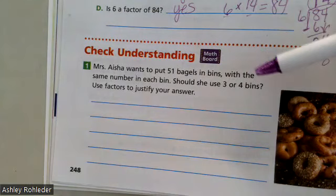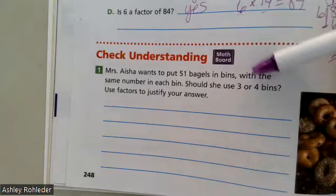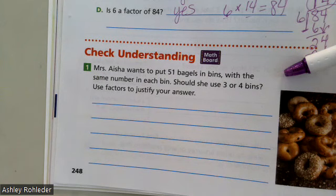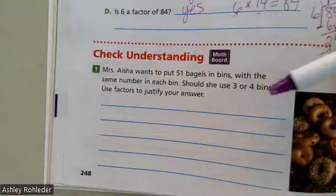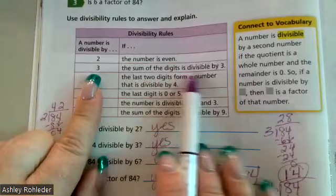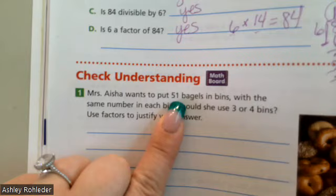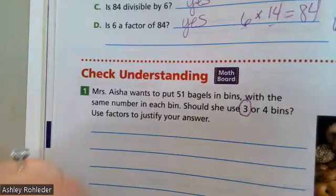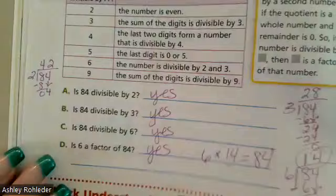Let's do another one. Mrs. Aisha wants to put 51 bagels in bins with the same number in each bin. Should she use three or four bins? Use factors to justify your answer. So we have to figure out, is three a factor of 51 or is four a factor of 51? Let's go ahead and look up here at our divisibility rules. So is it divisible by three? The sum of the digits is divisible by three. What are our two digits? Five and one. And what's the sum of five and one? Six. Is six divisible by three? Yes. So can we take 51 divided by three and get an even number? Yes. So is three a factor of 51? Yes.